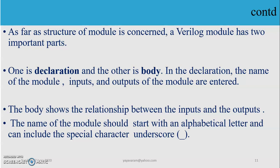For example, suppose I have an AND gate — what is the input to the AND gate, what is the output of the AND gate, and so on. The body gives the relationship between the inputs and outputs — that is, how the output is obtained from the input. The name of the module should start with an alphabetical letter and can include the special character underscore.